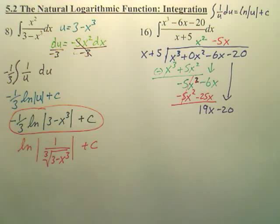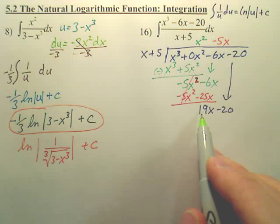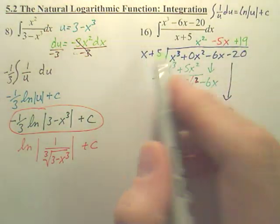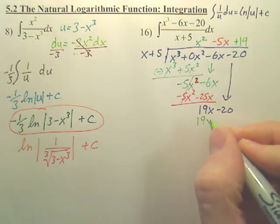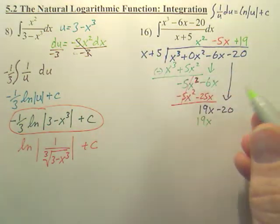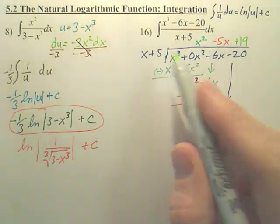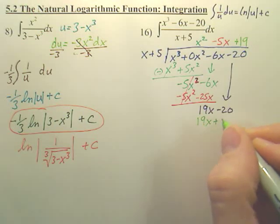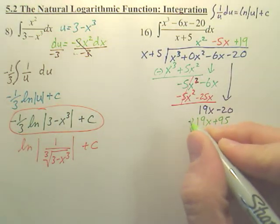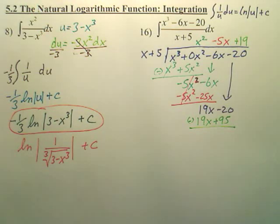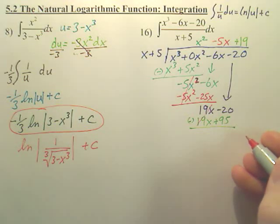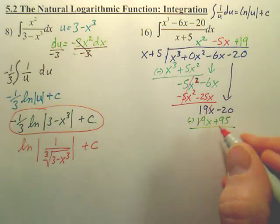And what would that be? What times x gives us 19? It looks like 19. So 19 times that is 19x, and 19 times 5 is 95. 20 times 5 is 100, so 5 less than 100 is 95. And again, you're going to subtract down. It looks like your remainder is going to be negative 115.